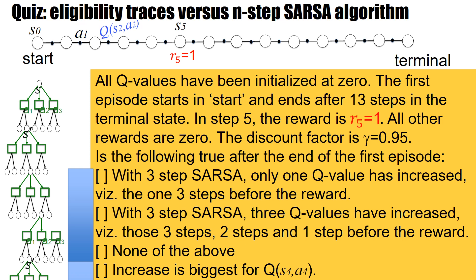Let us finish with a quiz on eligibility traces in comparison with N-step SARSA. We are in some graph and we start in a start state S0, take an action, come to state S1, take an action, come to S2, then S3, and continue. This red path is simplified: we start in state S0 and have a total of 13 steps until we find the terminal state.